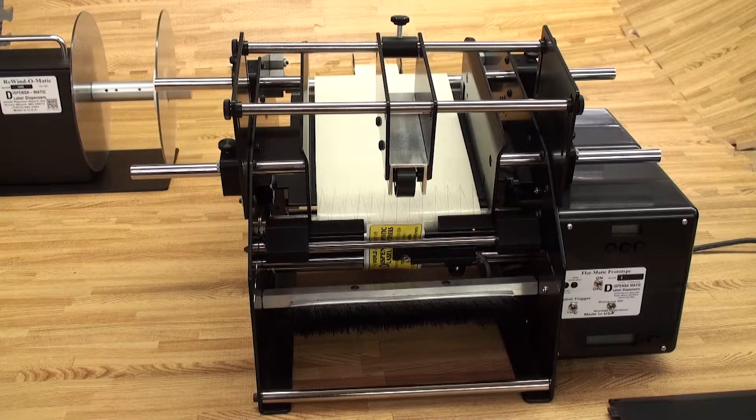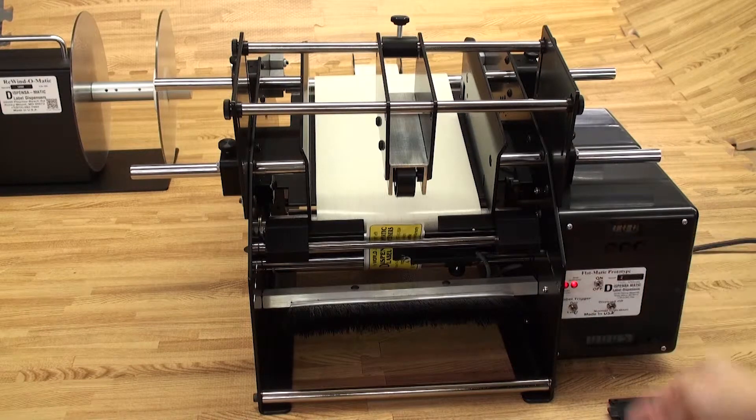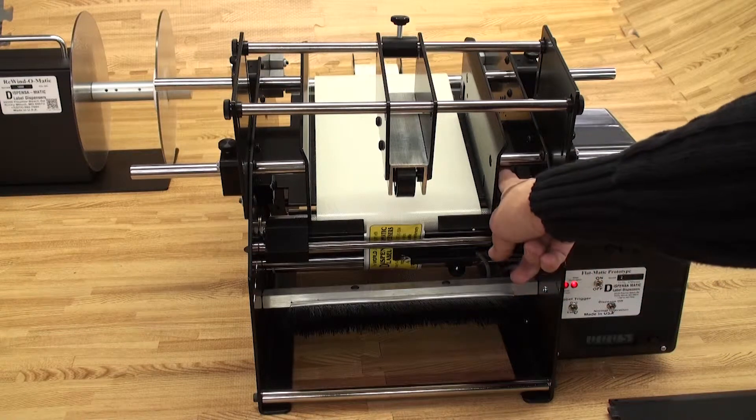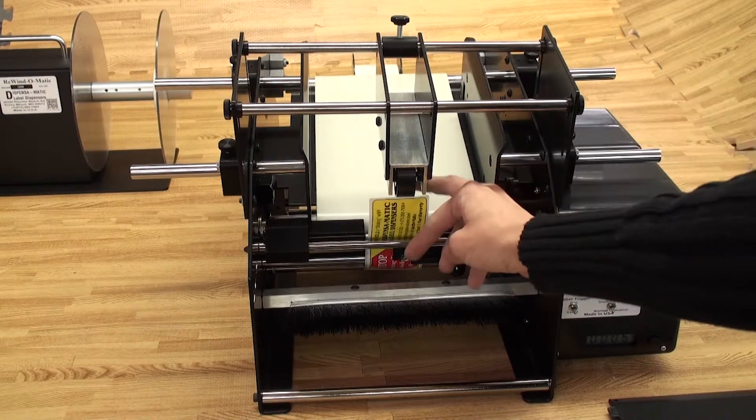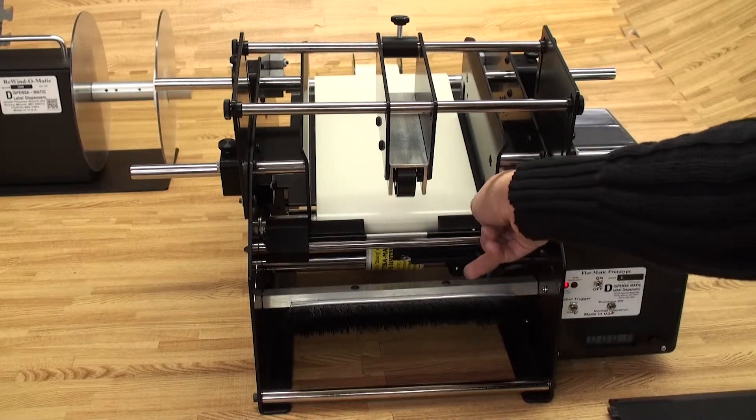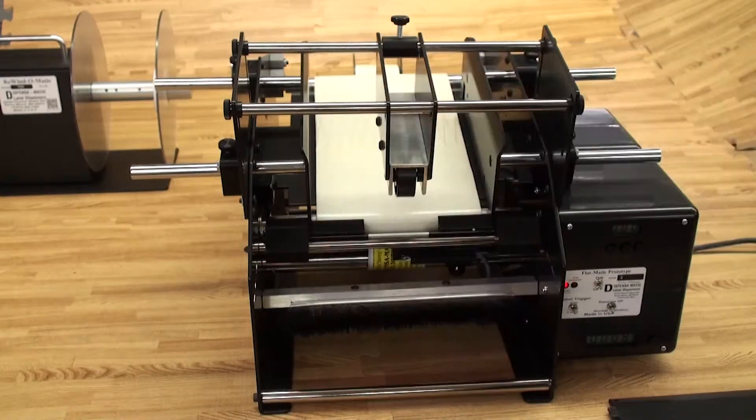Now that we have our labels threaded, we are going to turn on the machine and turn the switch back to normal operation. We are going to run our hand over the laser repeatedly until we dispense two labels. There are our first two labels.